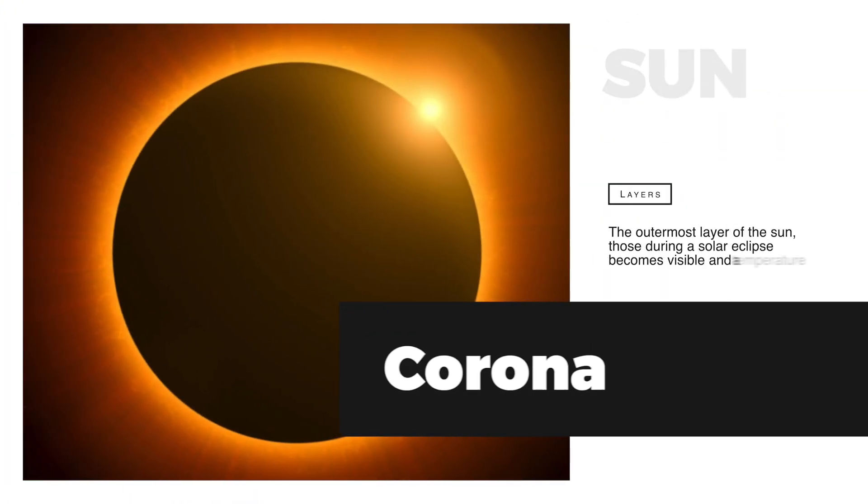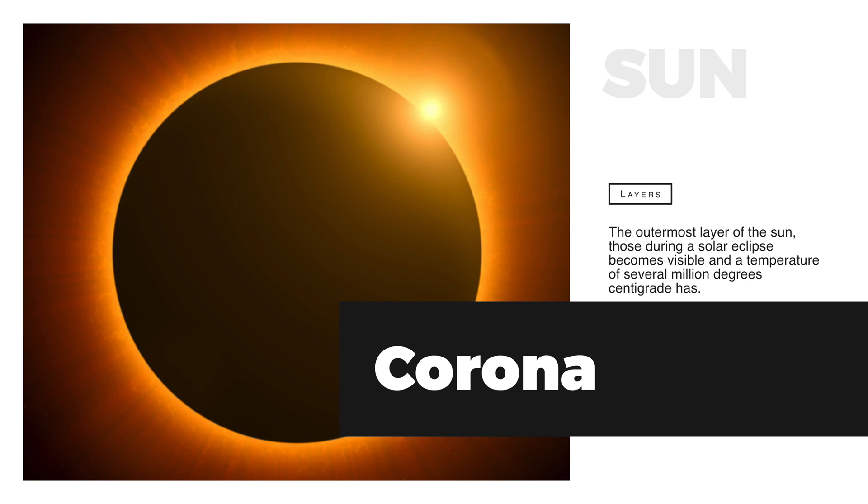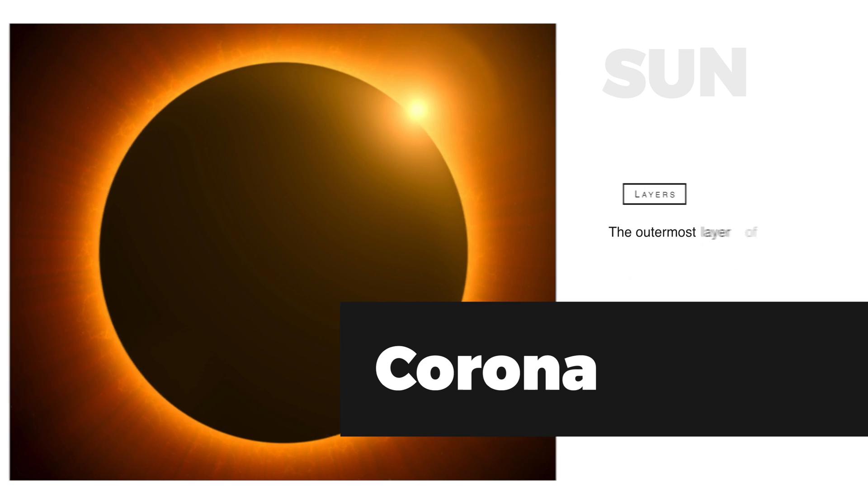The corona is the outermost layer of the Sun, which becomes visible during a solar eclipse and has a temperature of several million degrees Celsius.